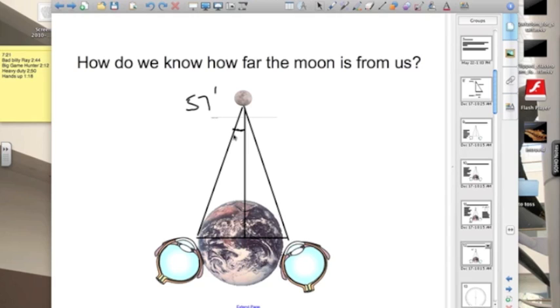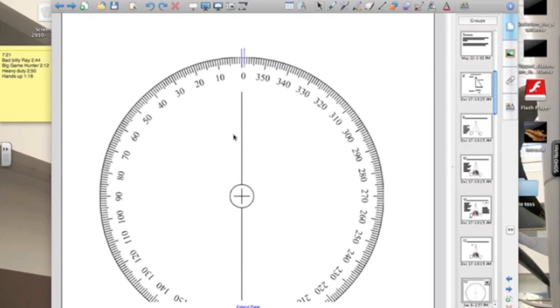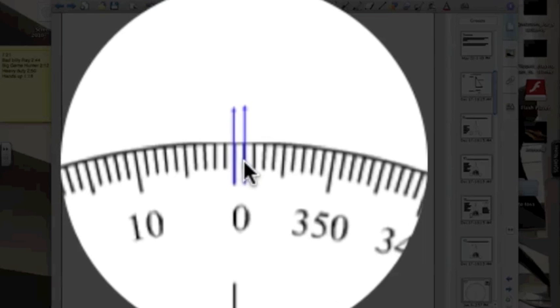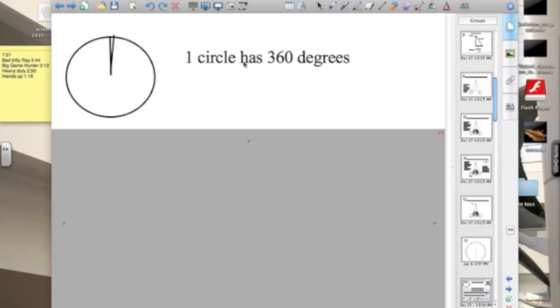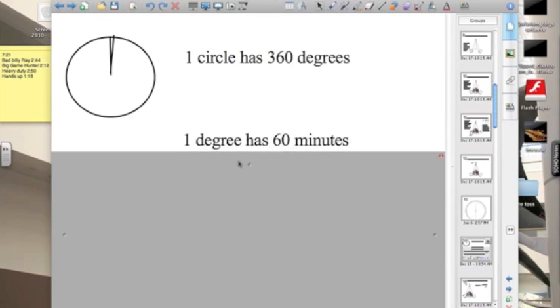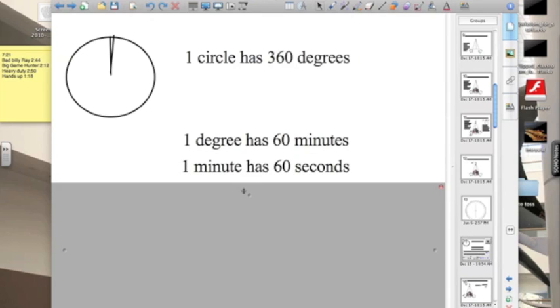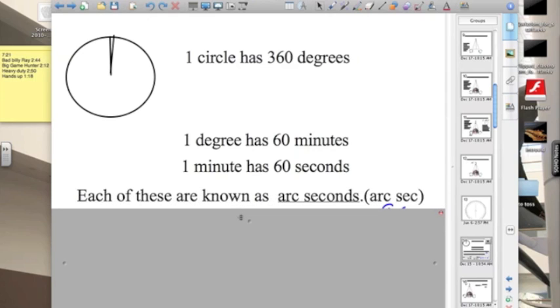Let's make sure we understand what 57 minutes of an arc really is. If we take a circle, we can divide that up into 360 degrees. Here is one degree. If I break up this one degree 60 times, each one of those is a minute. So one degree has 60 minutes. And you guessed it, I can take each of those minutes and break them up 60 times. That means every minute has 60 seconds. Each of these is known as an arc second. And they're really, really small angles.